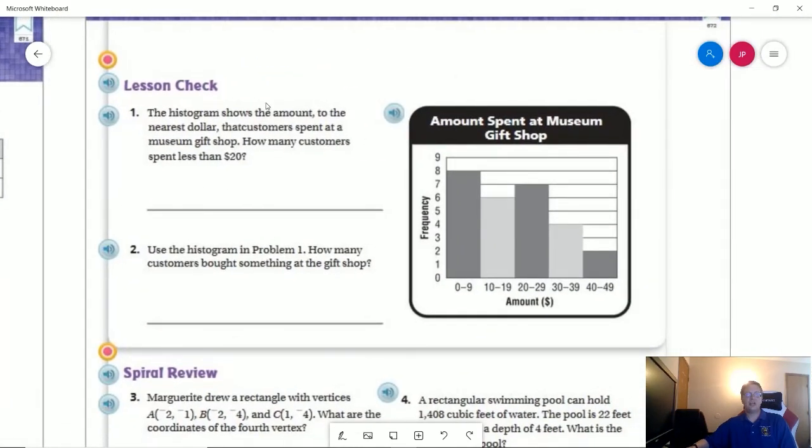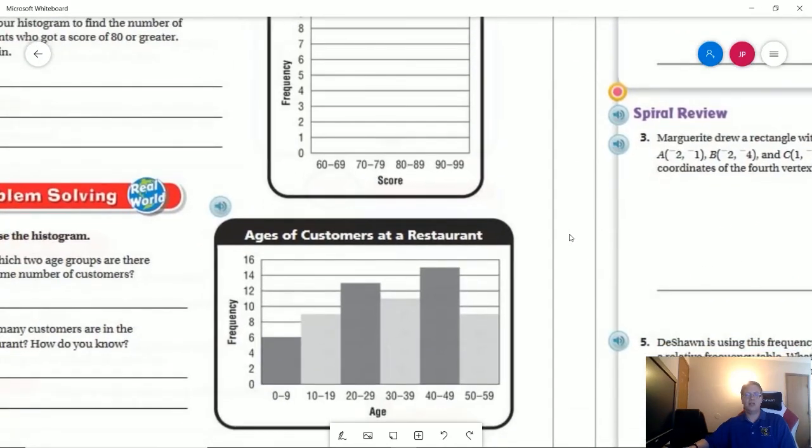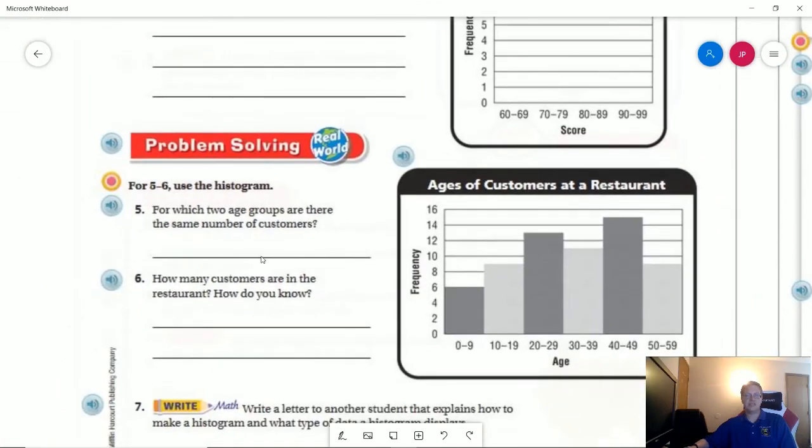For number six we can talk about how many customers are in the restaurant total and how we would know the answer for that. Your hint is going to be: take a look at the categories for every single age and then think about what you can do to get the total answer of the number of people that are in there. Number one on the back: we are going to get how many customers spent less than twenty dollars, so think about what you need to look at for that part to group them together. Use the histogram in problem one: how many customers bought something? This is going to give us something similar to what we did for number six.